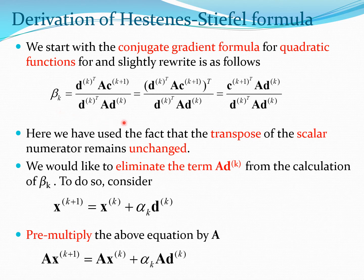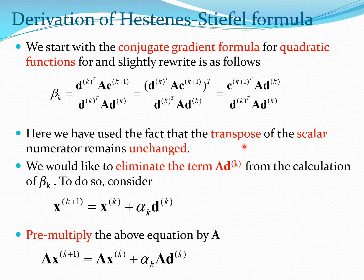Starting with the beta_k equation, both the numerator and denominator of this fraction are scalars, so I can take the transpose of a scalar without changing it and rewrite it in this form, recalling that for any two matrices A and B, (AB)^T = B^T A^T. We have used the fact that the transpose of the scalar numerator does not change. Now we are going to try to get rid of the term A*dk, which is present both in the numerator and the denominator.